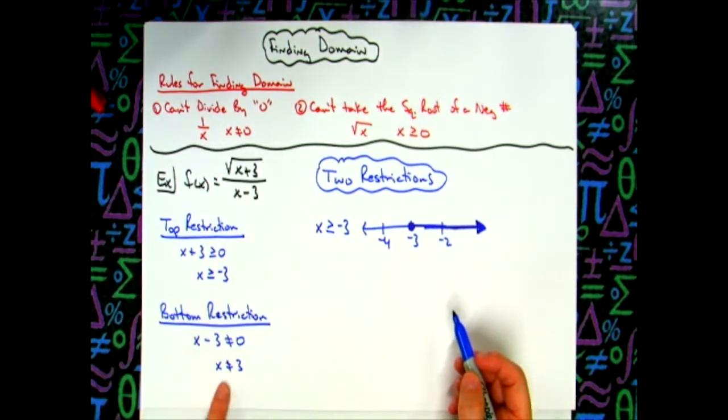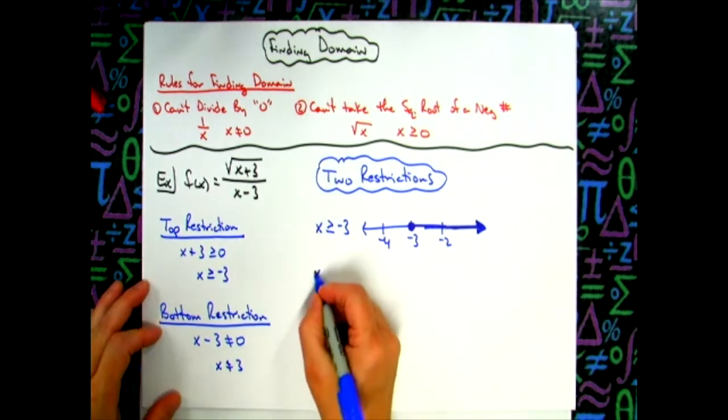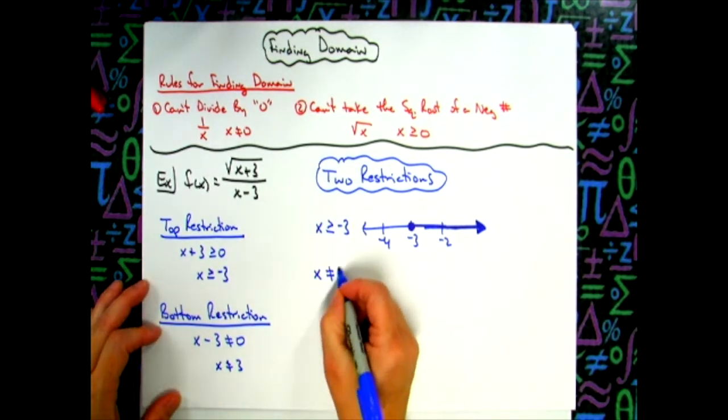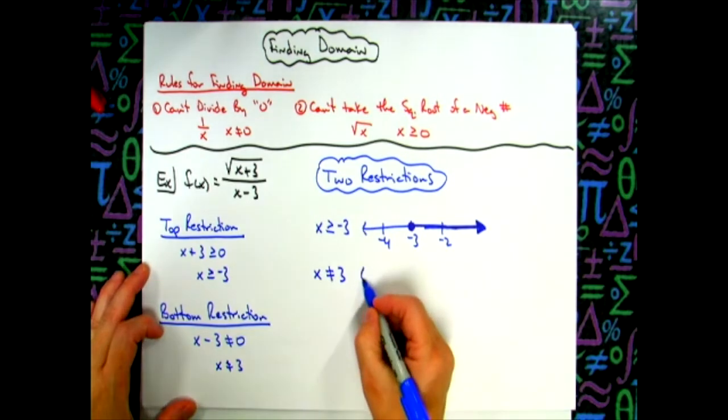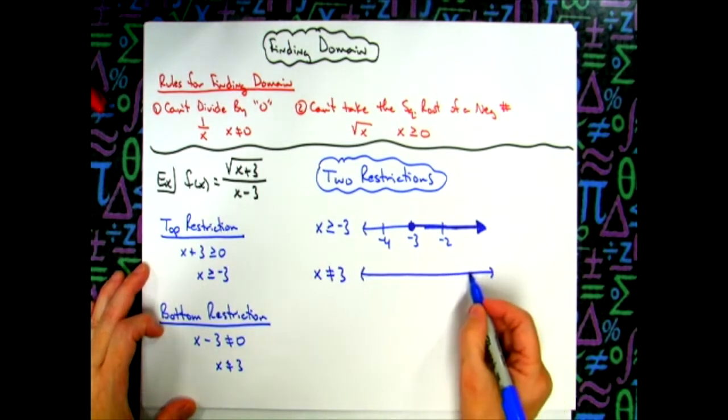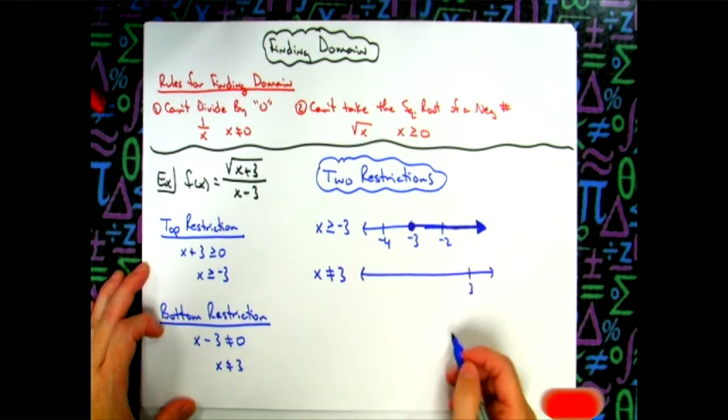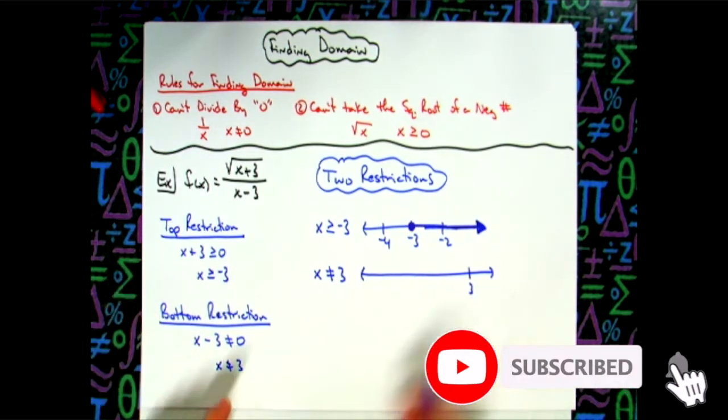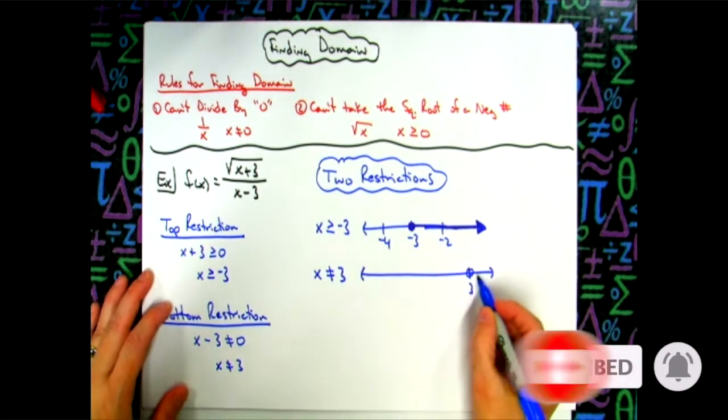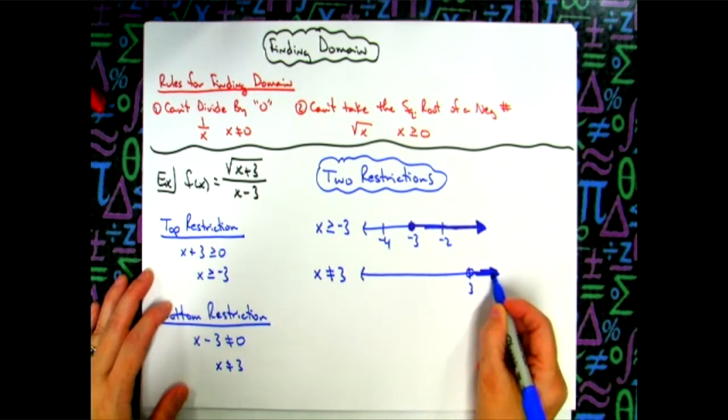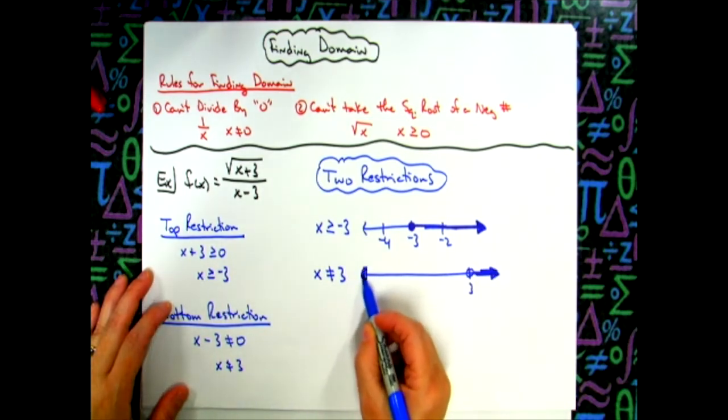Then I'm going to take my second restriction here. I'm going to say x cannot equal three. So again three would be over here somewhere if we're trying to draw this proportional. It can be all other numbers but not the three. So open dot on three. All of these numbers would be included in my domain and all of these numbers would be.